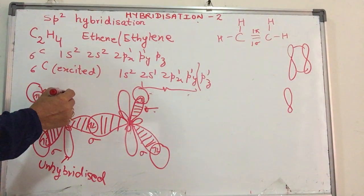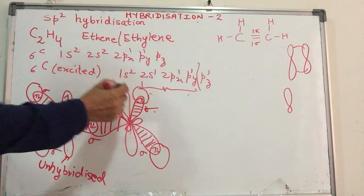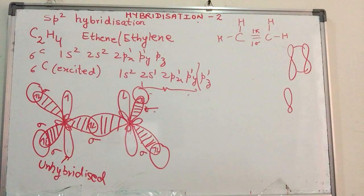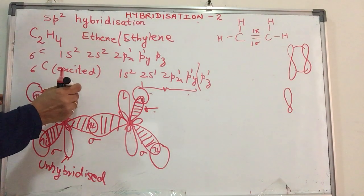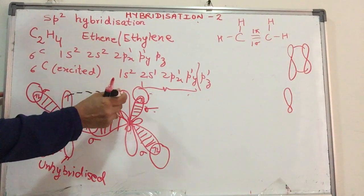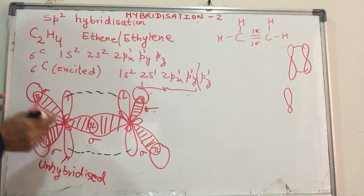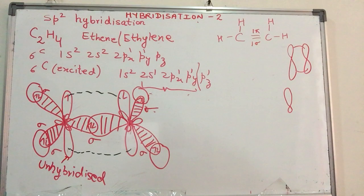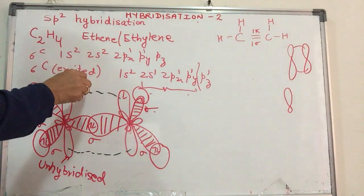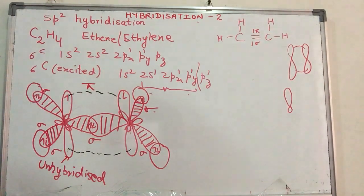You can avoid doing this. If you want, there is no compulsion for you to shade. It is just for clarity. Now each of these has got an unpaired electron. So they undergo what we call as pi bonding where there will be an overlap between the two lobes of the unhybridized p orbital. So there is one pi bond.